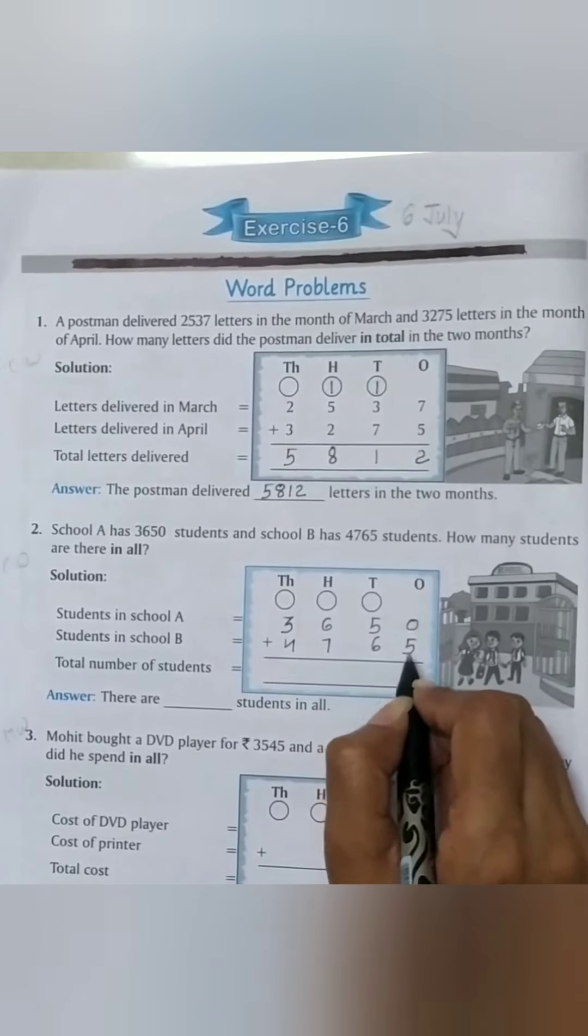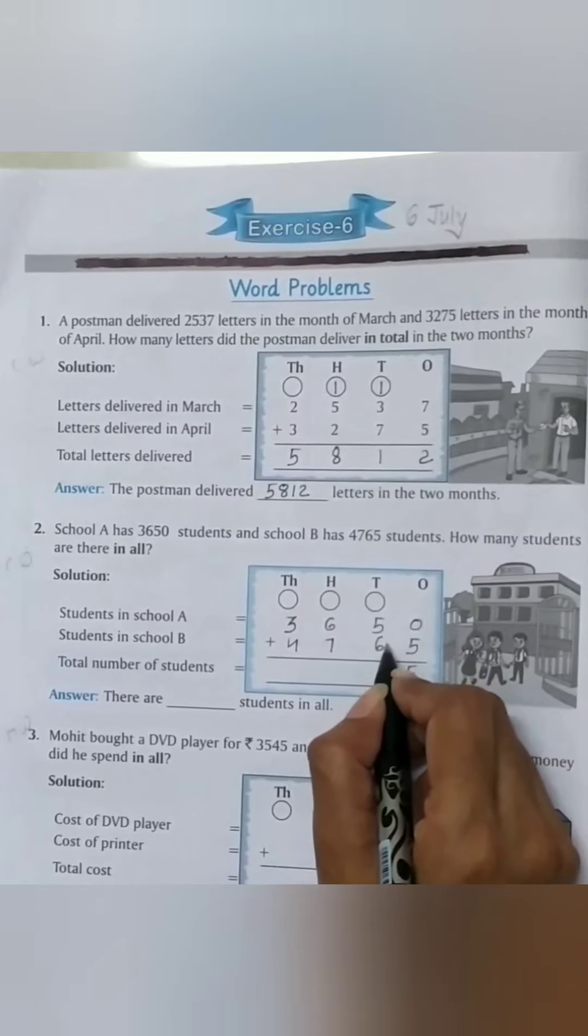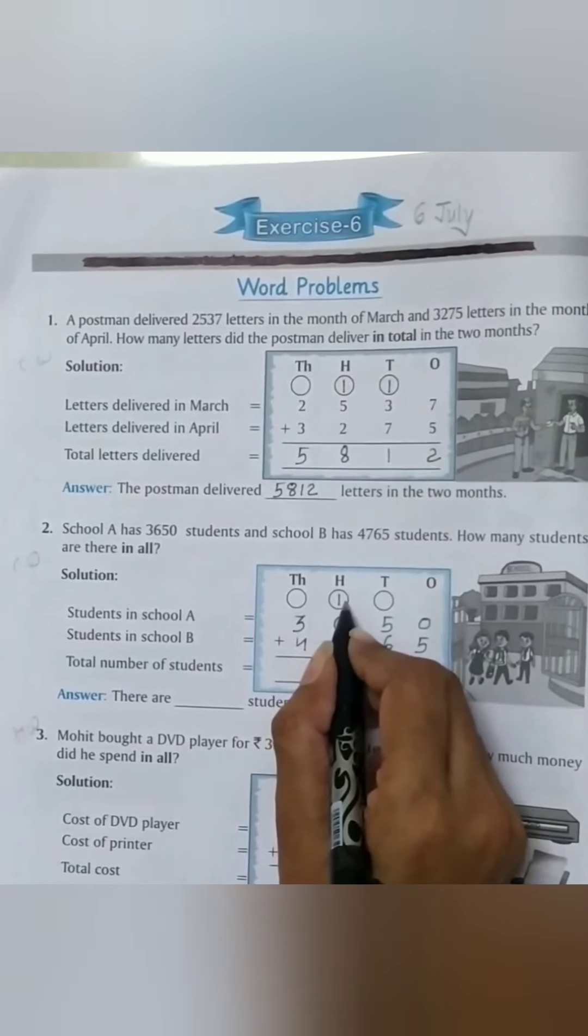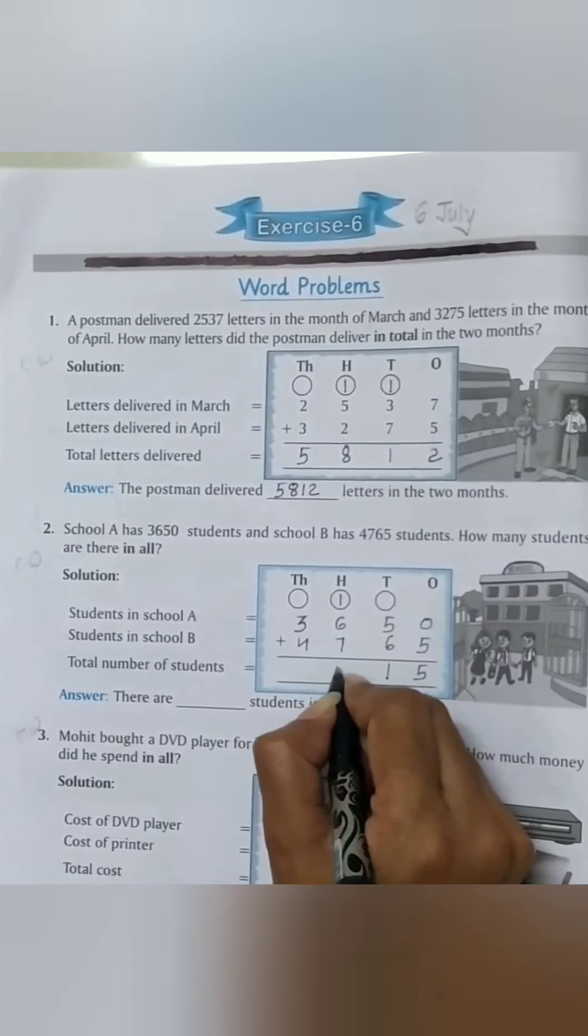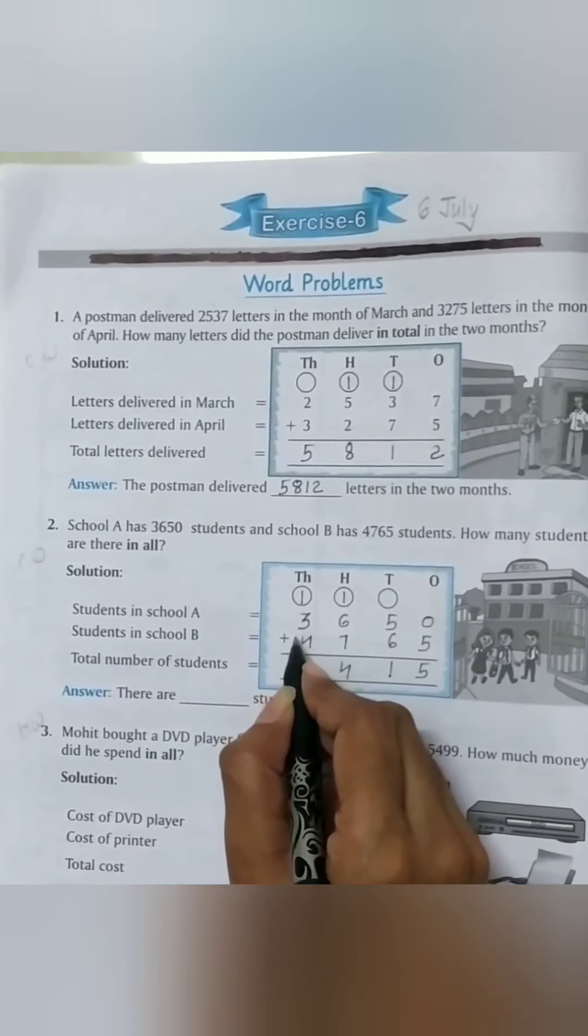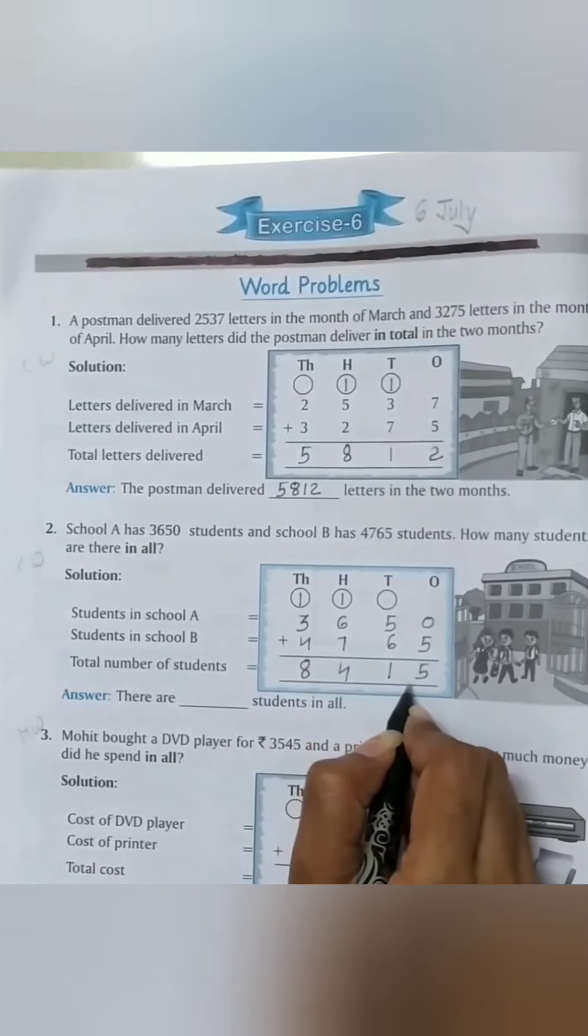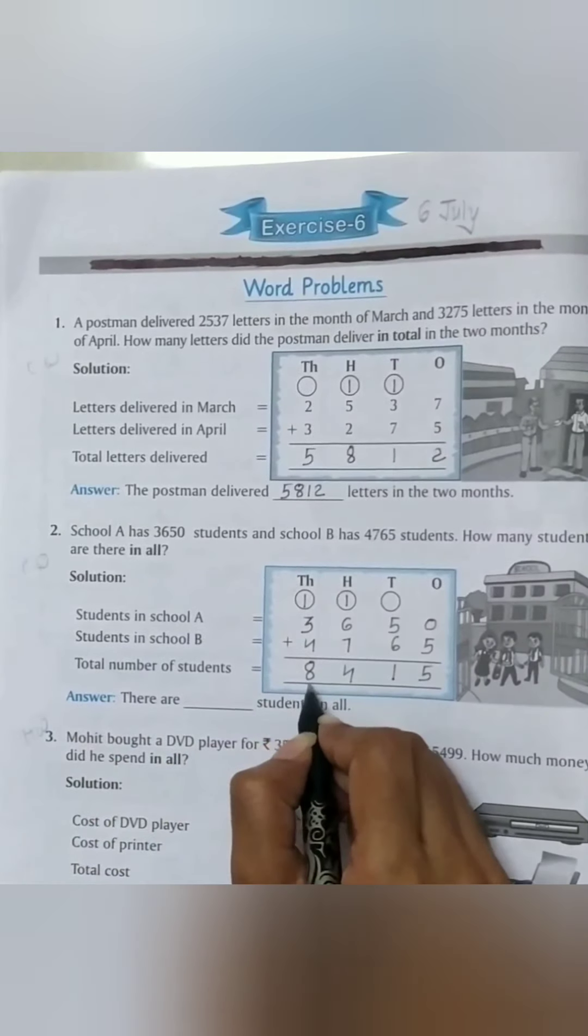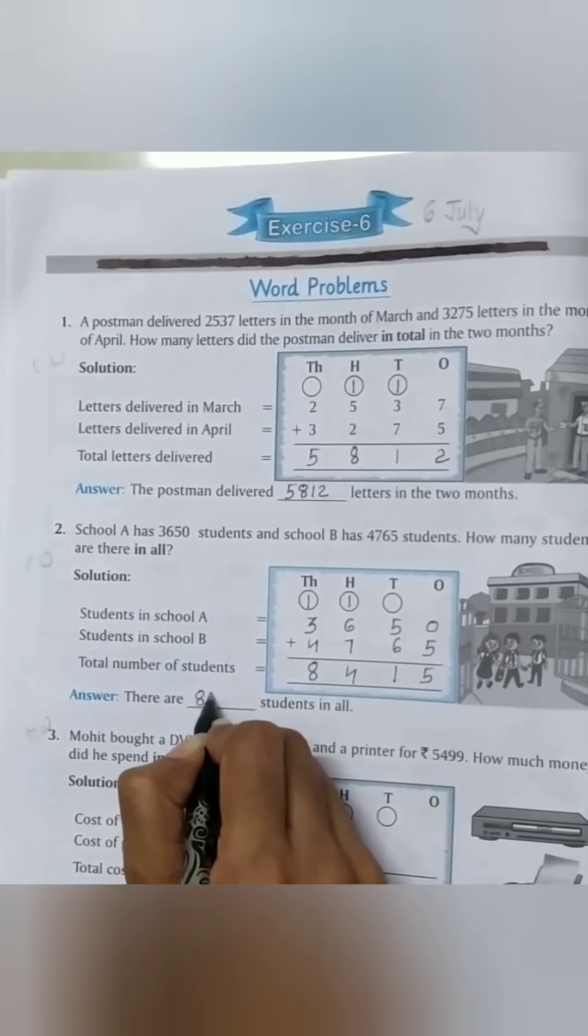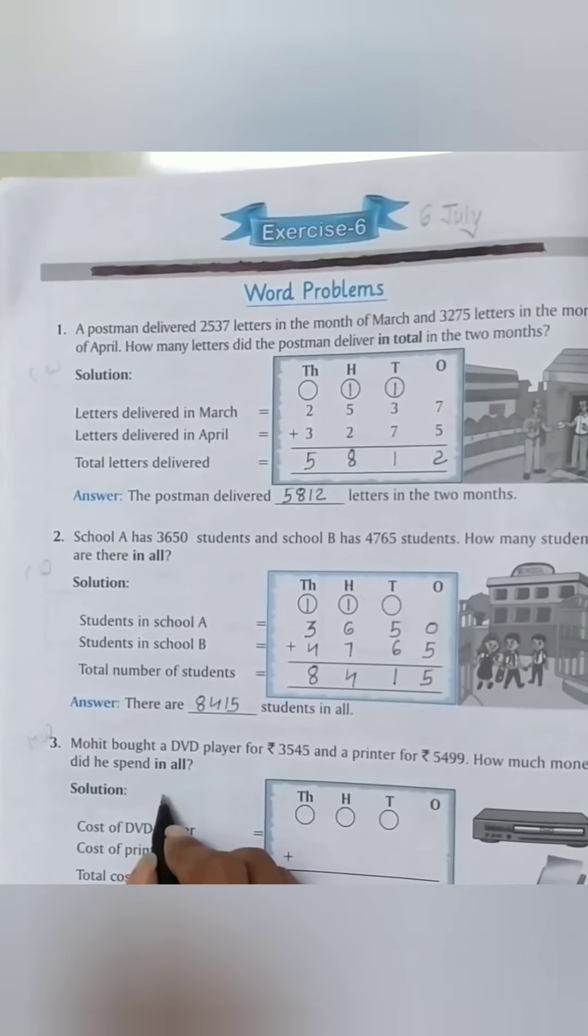Start from the ones place: 0 plus 5 equals 5. Tens place: 5 plus 6 equals 11. Write down 1, carry 1. 6 plus 1 equals 7, 7 plus 7 equals 14. Write down 4, carry 1. 1 plus 3 equals 4, 4 plus 4 equals 8. Total answer is 8415. There are 8415 students in all. Question No. 3 is homework.